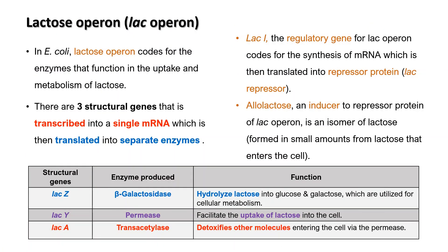E. coli is a bacteria commonly found in the intestine of humans and other mammals. In E. coli, the lactose operon or lac operon codes for enzymes that function in the uptake and metabolism of lactose, which is a milk sugar. There are three structural genes that are transcribed into a single mRNA, which is then translated into three separate enzymes.